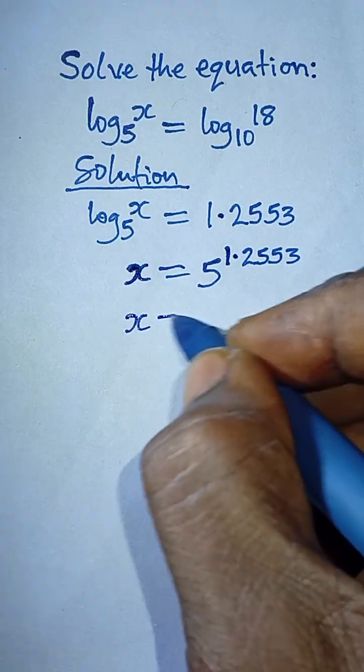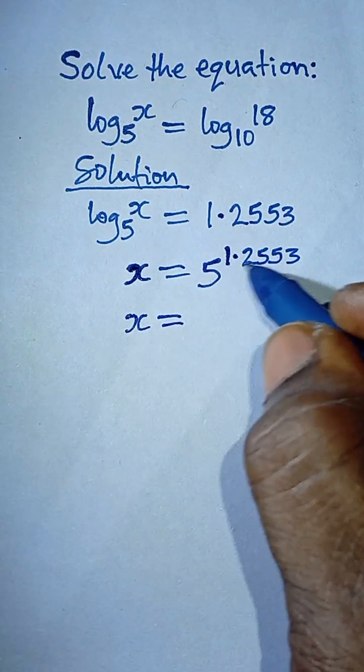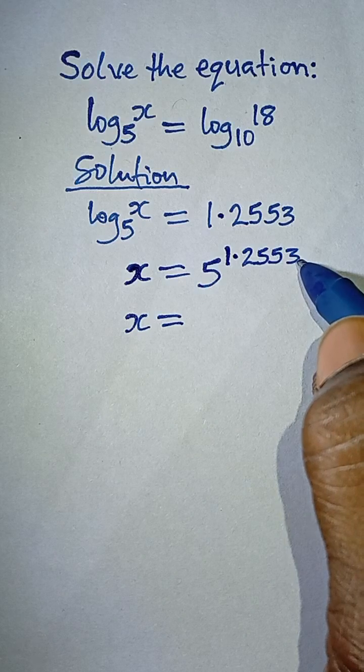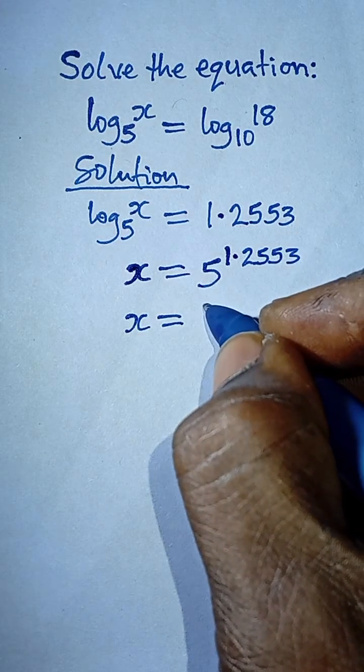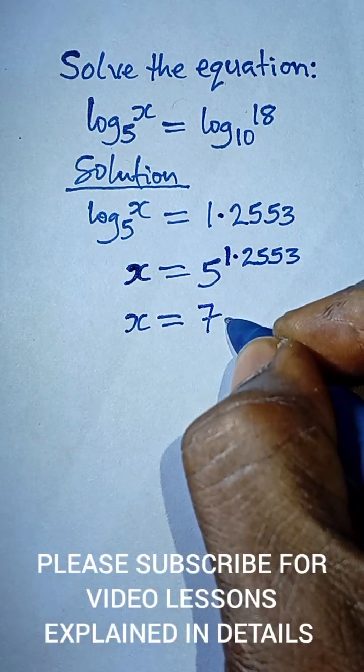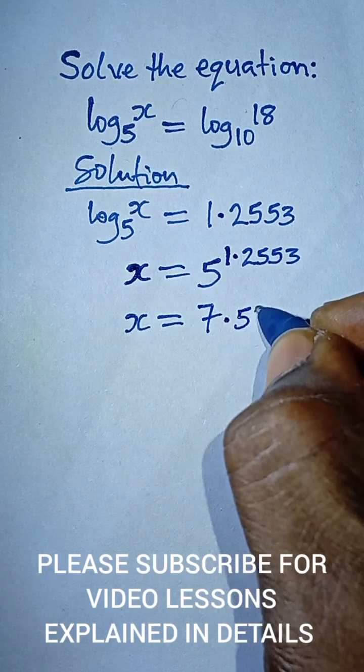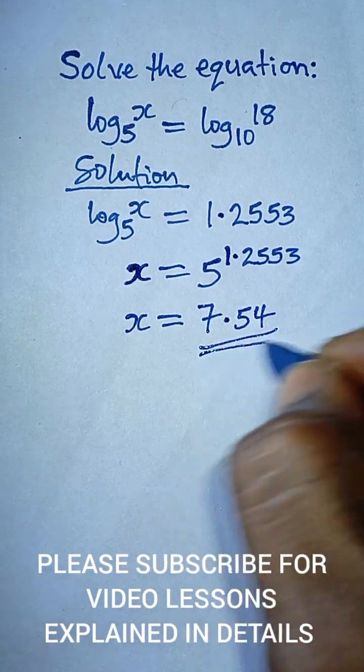Now from our calculator, when we press 5 raised by 1.2553, it's going to give us 7.54, so this becomes the final answer.